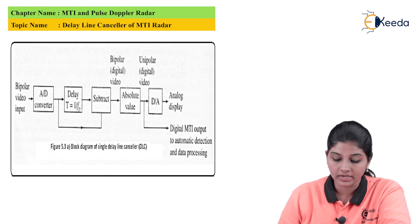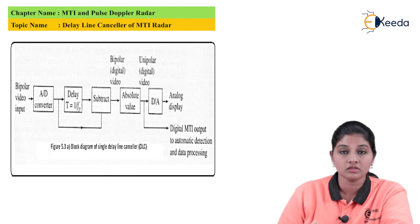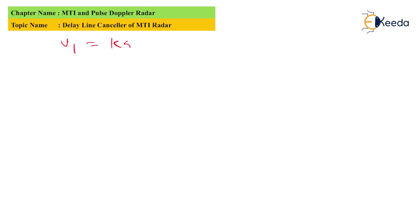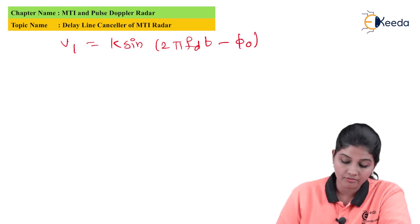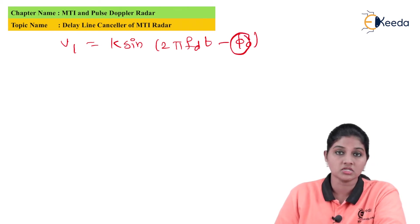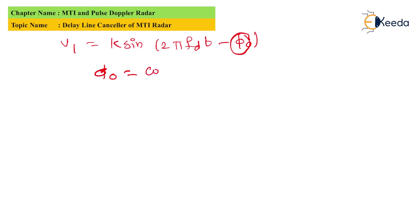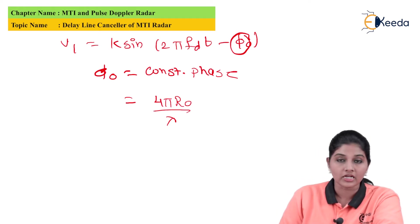The figure shows the block diagram of a single delay line canceler, which is a time domain filter. The signal at the output of the phase detector is given by: v1 = k·sin(2π·fd·t + φ₀), where fd is the Doppler frequency shift. The term φ₀ is the constant phase given as 4π·r₀/λ, and k is the amplitude of the signal.